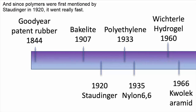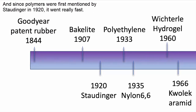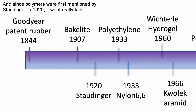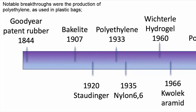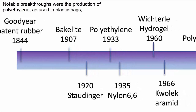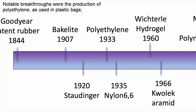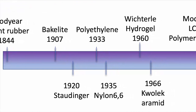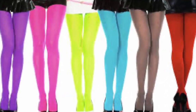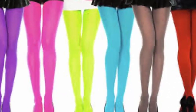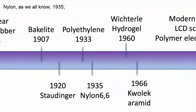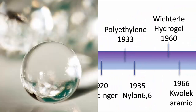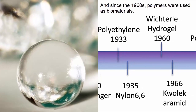Since polymers were first mentioned by Staudinger in 1920, they progressed really fast. Notable breakthroughs were the production of polyethylene, as used in plastic bags, in 1933; nylon, as we all know, in 1935; and then since the 1960s, polymers were used as biomaterials.